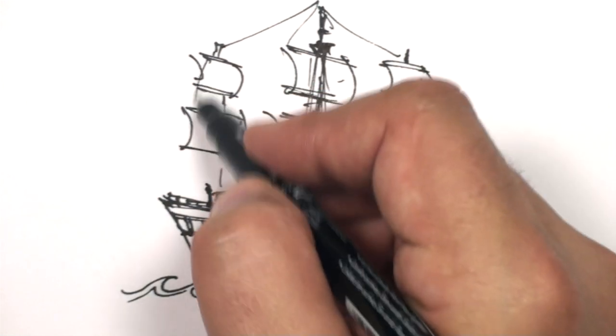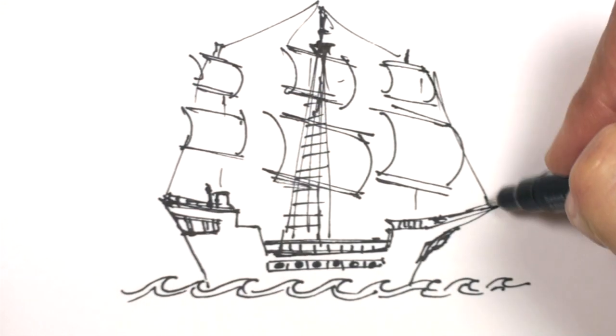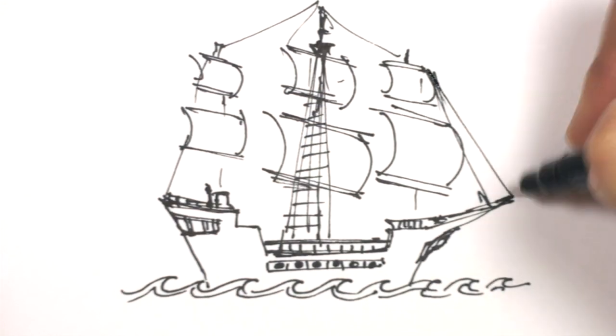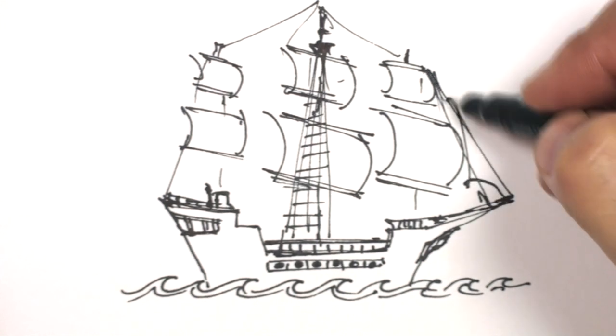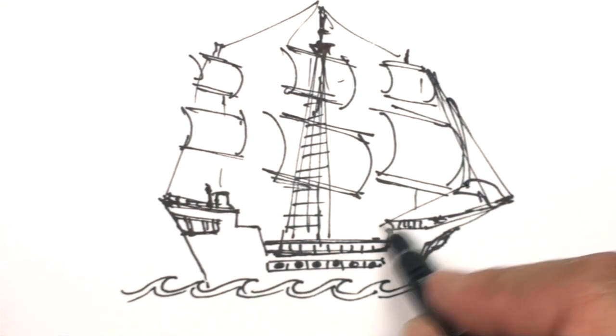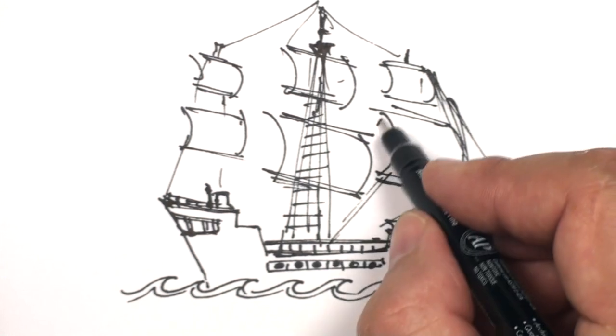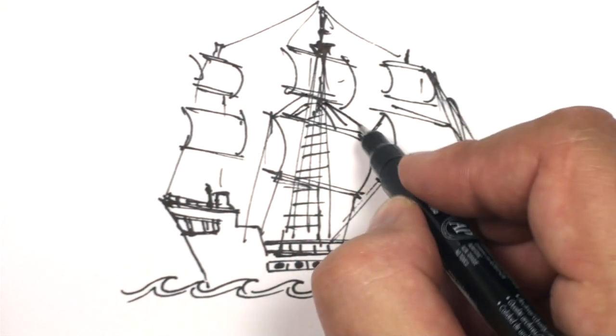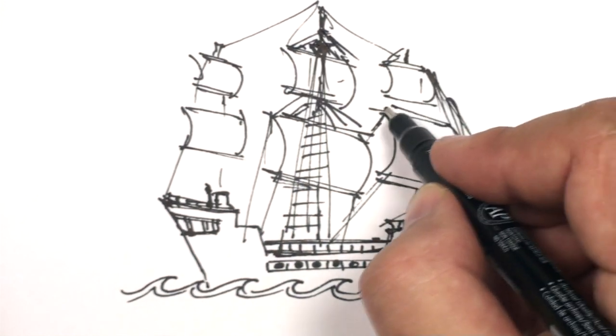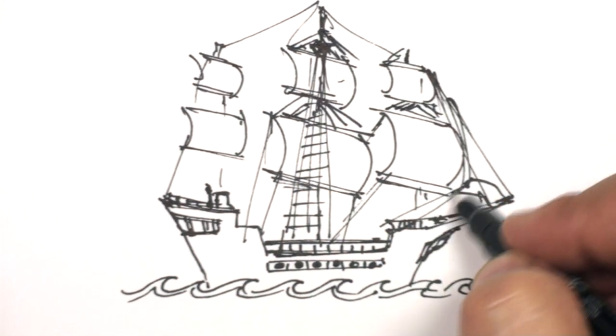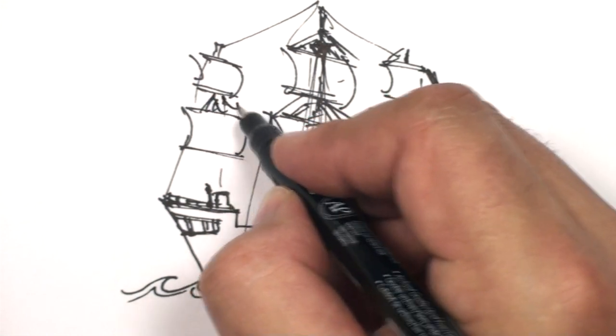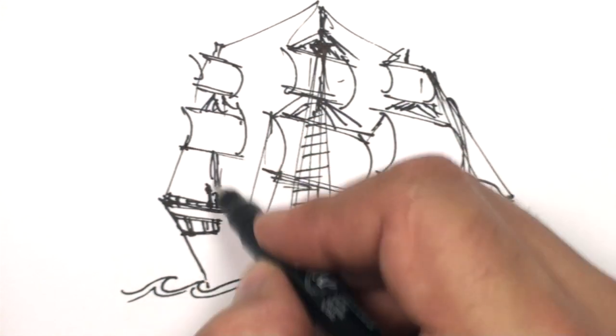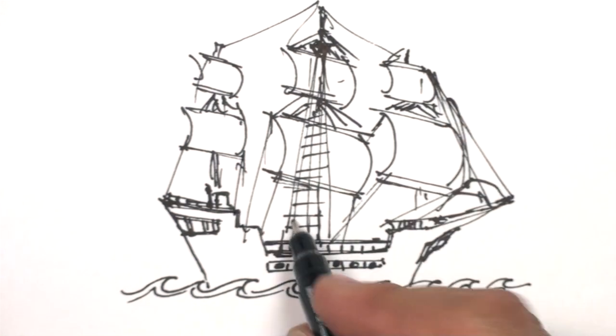Now I knew these all had to get connected up here so that it wouldn't fall apart. And then out here, a couple more sails. Out here, connect those. And then just connect all these, tie these all off to something. Make sure we've got a mast. Make sure we tie all that off.